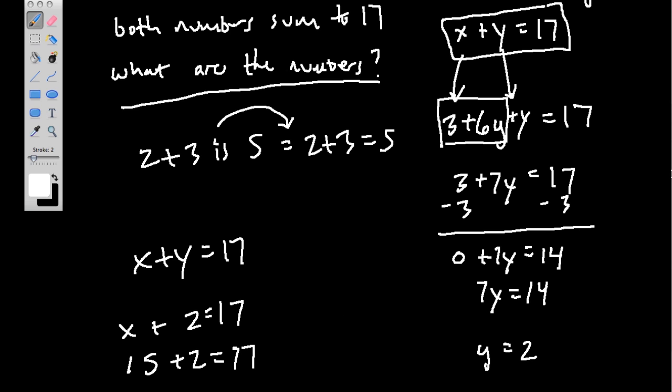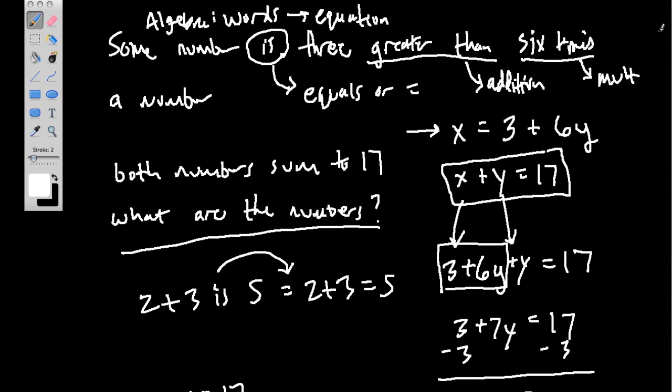And you can always check if this works by going back to the original equation. So we had this one number, 3 greater than 6 times a number. So that means that x, which equals 15, if we took y and we multiplied y by 6, so 2 times 6, we get 12. And then we add 3 to it, we should get 15. And we do. And if we take 15 and 2, we get 17. So we know this works.